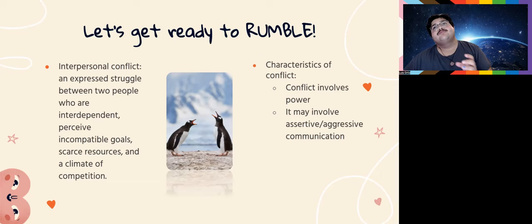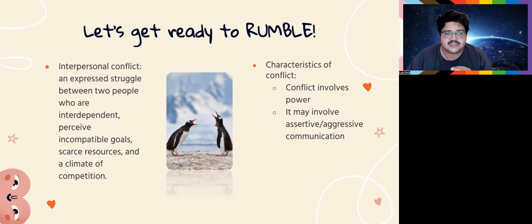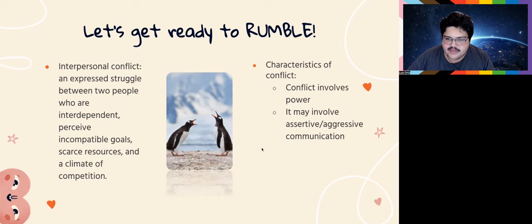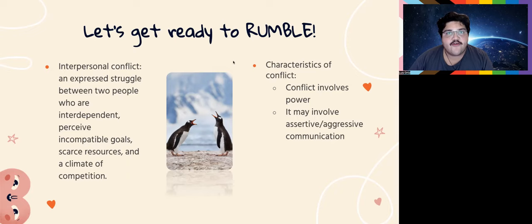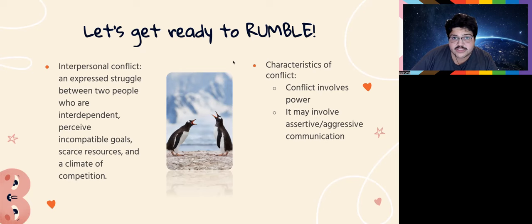Interpersonal conflict is an expressed struggle between two people who are interdependent, perceive incompatible goals, scarce resources, and a climate of competition. Conflict typically involves power — not always explicit power, but present in social cues, like between a father and a son. It may also involve assertive or aggressive communication; it doesn't always escalate to screaming matches, but it definitely can.